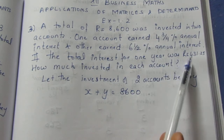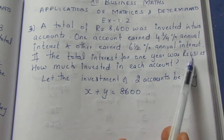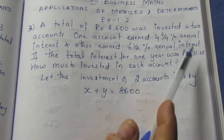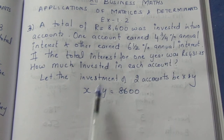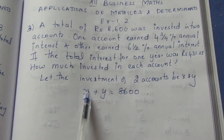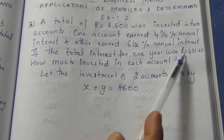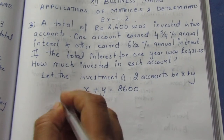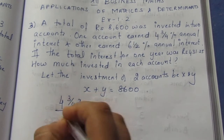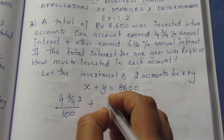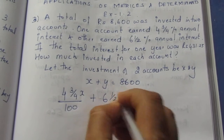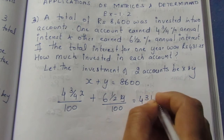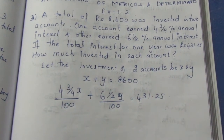Let the investment of the 2 accounts be X and Y. Adding the 2 accounts gives Rs. 8,600. The total interest for 1 year is Rs. 431.25. So: 4¾% of X divided by 100, plus 6½% of Y divided by 100, equals 431.25.